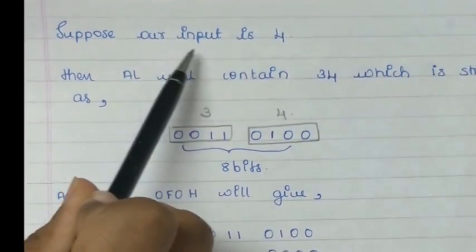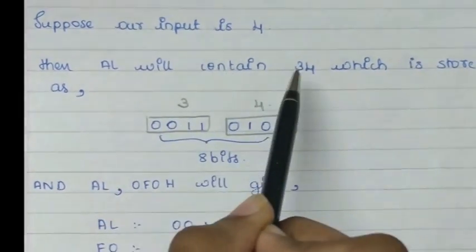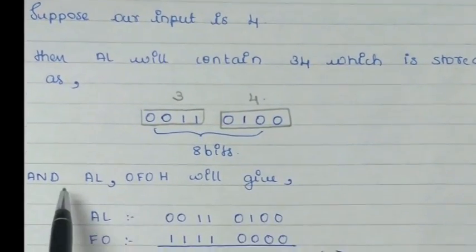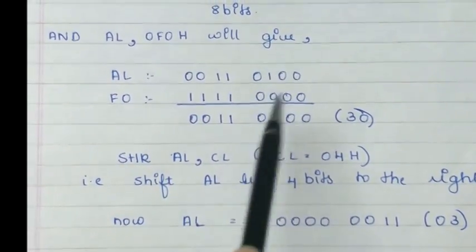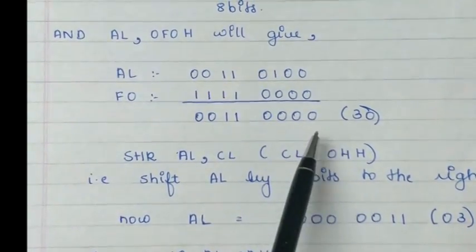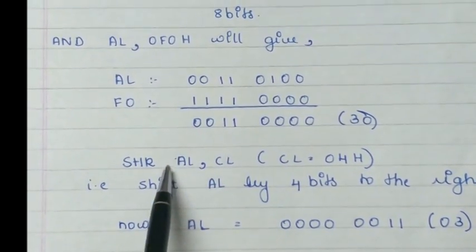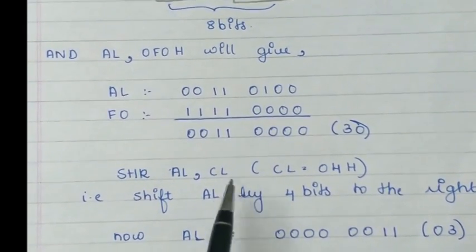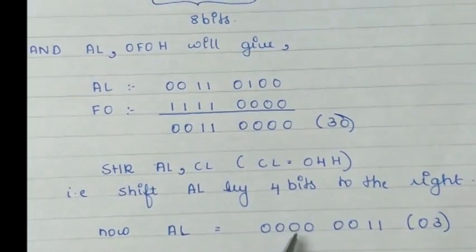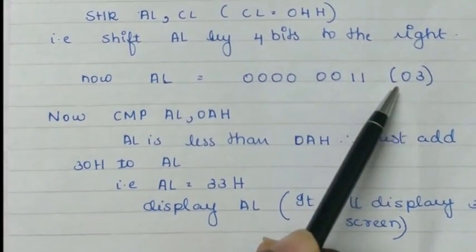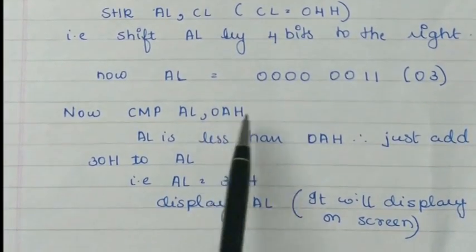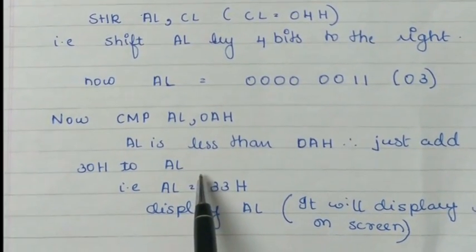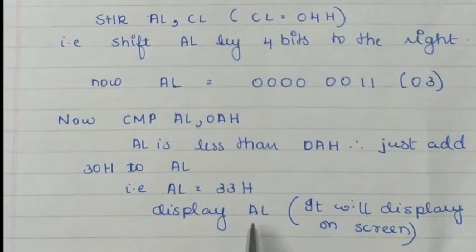Let us now see in detail how it works in our example. Suppose, our input is 4, then al will contain 34h which is stored as 8 bit number. And al with f0h will give 3 and 0. But, we want 3. So, we shift al by 4 bits. This 4 bits is stored in a cl register. Now, al will have the value 03h. We compare 03h with 10. If it is less than 10, we just add 30h to that to get the ASCII. Else, we need to add 7h and 30h.